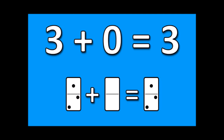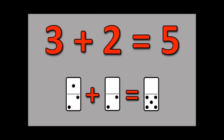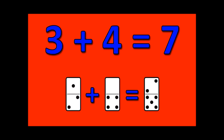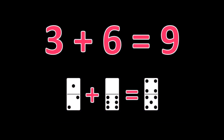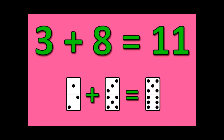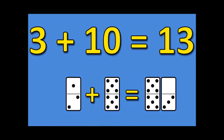Three plus zero is three. Three plus one is four. Three plus two is five. Three plus three is six. Three plus four is seven. Three plus five is eight. Three plus six is nine. Three plus seven is ten. Three plus eight is eleven. Three plus nine is twelve. Three plus ten is thirteen.